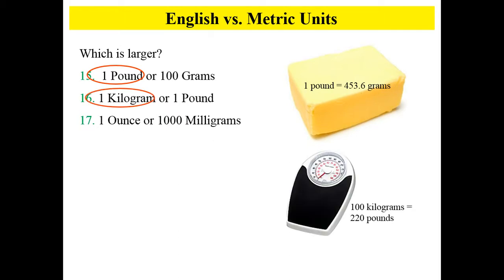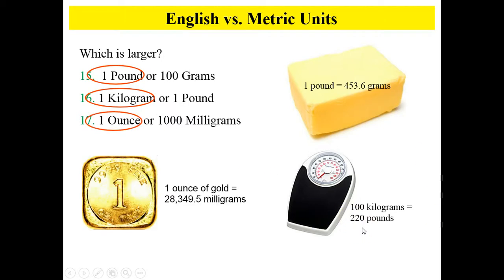One kilogram is larger than one pound. So if you're measuring yourself in pounds when you step on a scale, you're going to have a smaller number than if you're measuring in kilograms. 100 kilograms is equal to 220 pounds. And finally, one ounce or 1,000 milligrams — one ounce is a larger unit than 1,000 milligrams. A milligram is a really, really tiny amount.